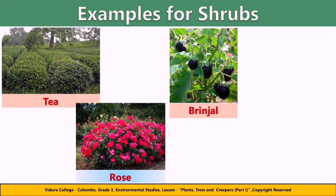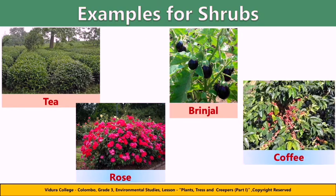Brinjal, also known as eggplant, is another example of a shrub. The fruit is widely used in cooking. The coffee plant is a shrub that bears fruit along its branches. Within each fruit lies one or two seeds, which are better known as coffee beans.